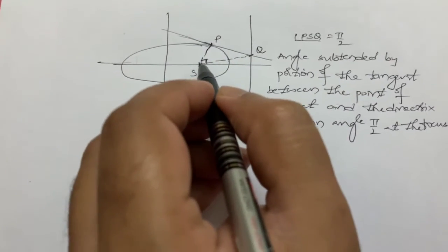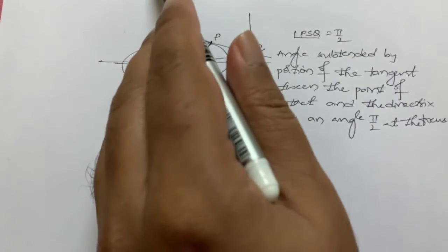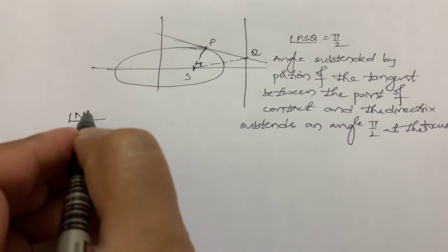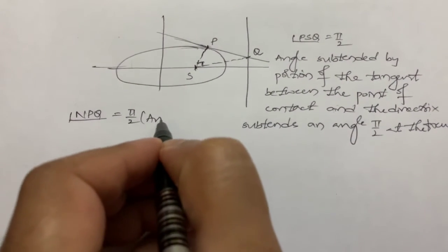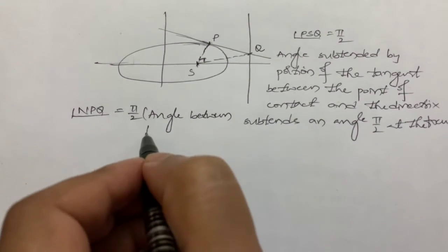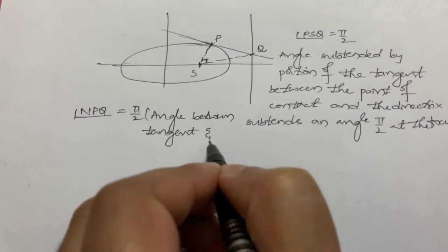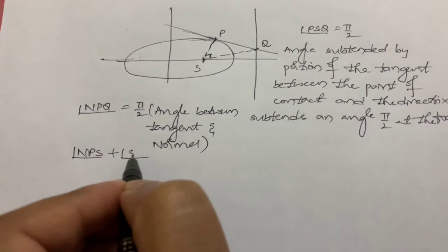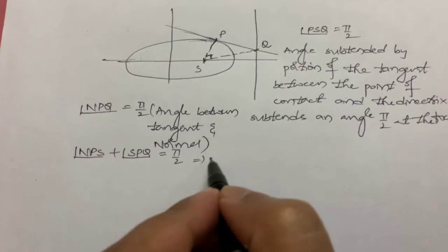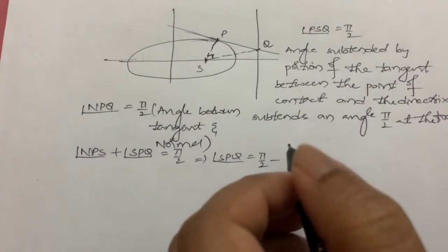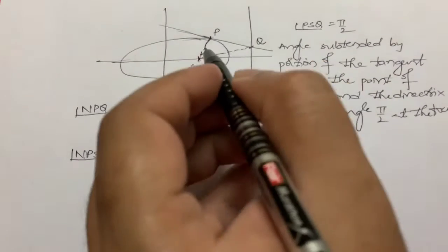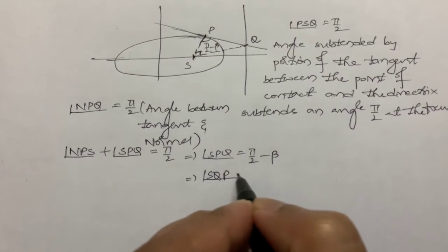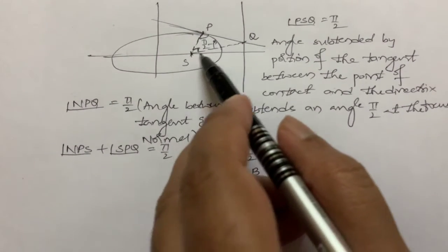We want angle SPN. Since the tangent and normal are at 90°, angle NPS + angle SPQ = π/2. So angle SPQ = π/2 − β, because angle NPS is β. This in turn gives us angle SQP = β.